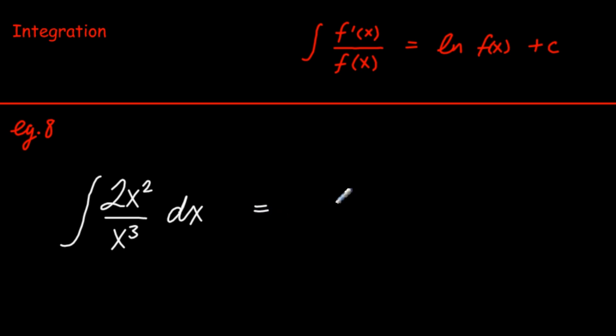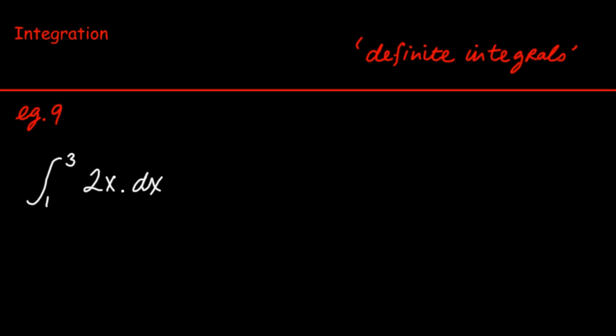Example 8 is an interesting one that often comes up in the Leaving Cert. If we notice that the top of the fraction is the derivative of the bottom, the answer is the natural log of the bottom plus C. This is an important pattern to recognise.